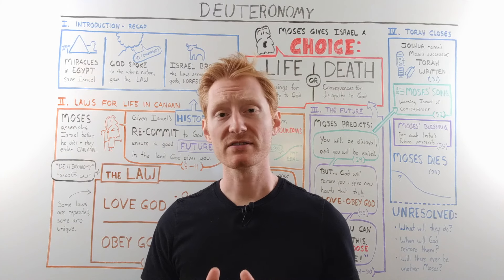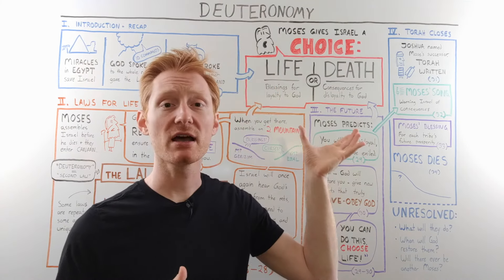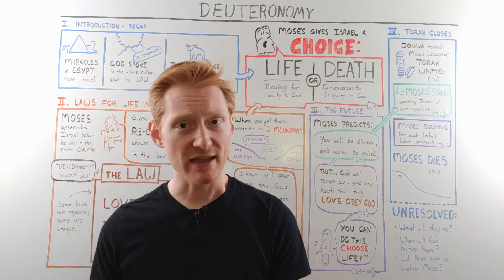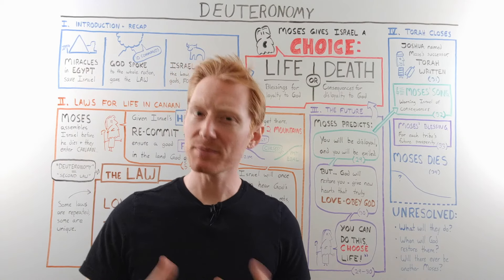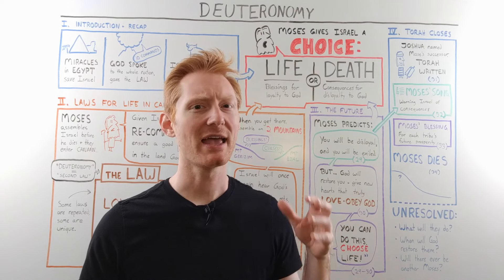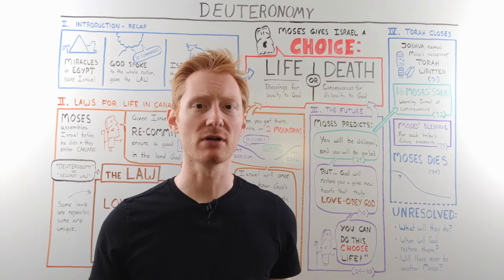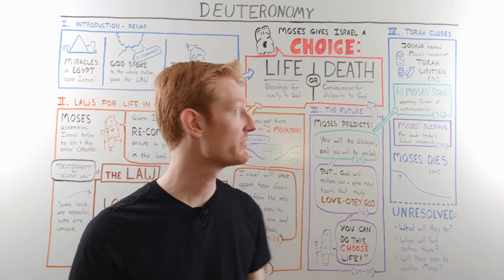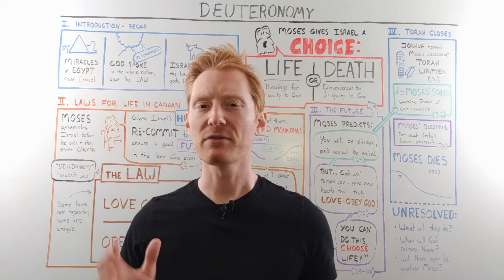The book of Deuteronomy falls into four main sections, and they all center on Moses posing a choice to the people of Israel. He says you can choose between life in the land of Canaan, which God has promised them, and the blessings that come with following God, or death, destruction, and exile if they choose to be disloyal to God. Everything about Deuteronomy is centered on this choice.